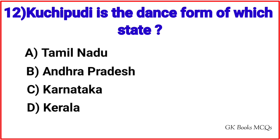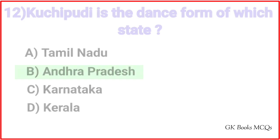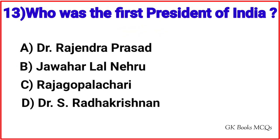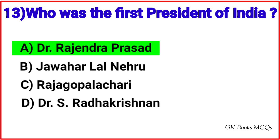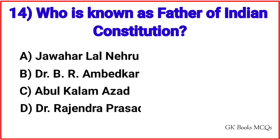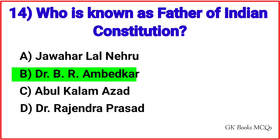Question 11: Who is the author of the book Broken Wing? Correct answer is option C, Sarojini Naidu. Question 12: Kuchipudi is the dance form of which state? Correct answer is option B, Andhra Pradesh. Question 13: Who was the first president of India? Correct answer is option A, Dr. Rajendra Prasad.